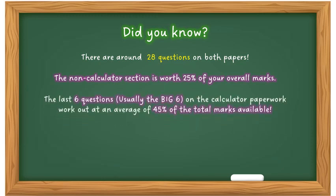Now the last six questions, usually the big six, are on your calculator paper. They work out an average of about 45% of the total marks available. That's the last six questions. So if you think about it, 45% on six questions and 25% on your non-calculator paper gives you a total of 70%. That's a big chunk and it's a good pass. Now you know where to focus your study, the big six. So good luck.